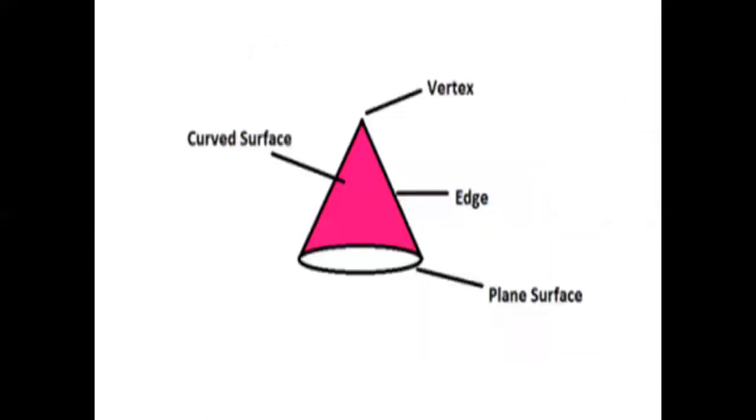Next, cone. A cone is formed by a set of line segments, half lines or lines connecting a common point, the apex to all of the points on a base. That is, in a plane that does not contain the apex. It has 2 faces, base shape is circled. Common objects with this shape, ice cream cone, Christmas tree.